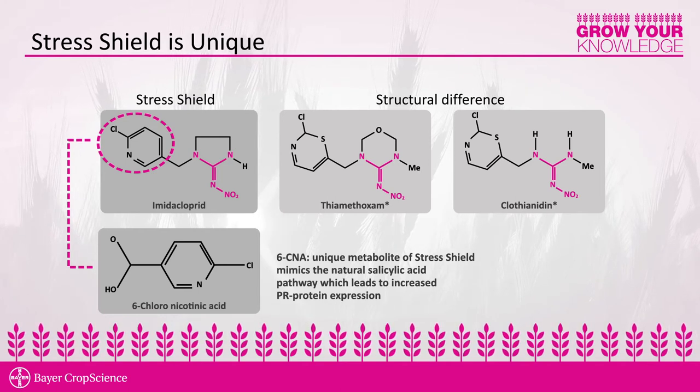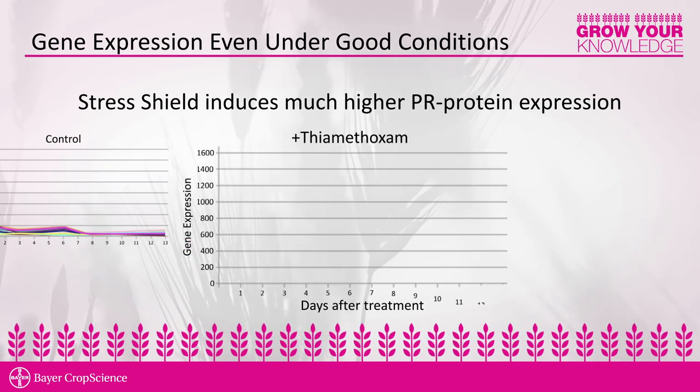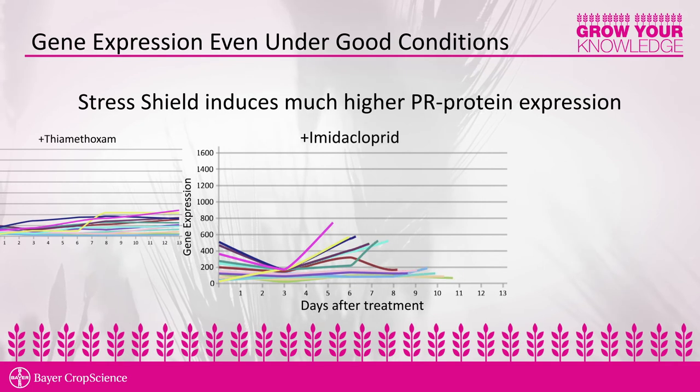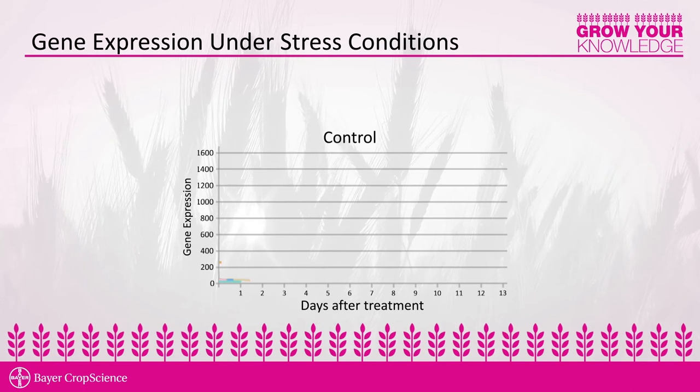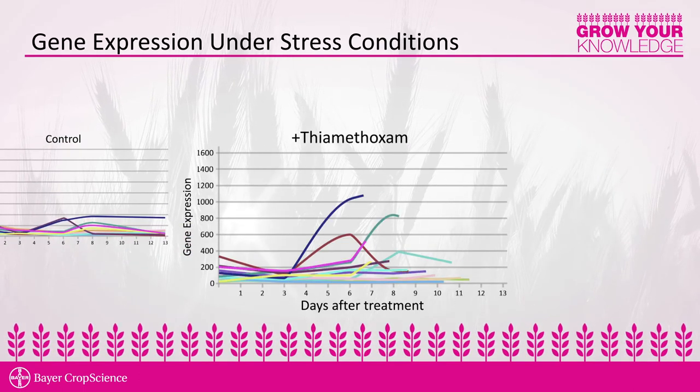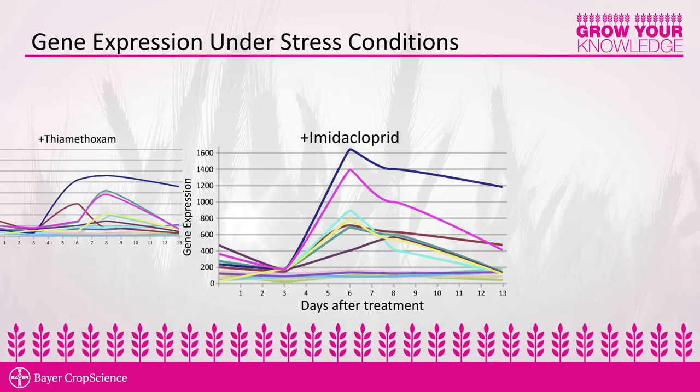When a plant is stressed by disease, it will respond by producing PR proteins to defend against that disease. Non-drought stress plants treated with Stress Shield show an increase in these plant stress protein responses. Other neonic insecticides, because they don't produce 6-CNA, do not result in an increase in these disease stress plant proteins. The reason we get the unique reaction from 6-CNA is that it mirrors the natural salicylic acid pathway in the plant. When we do have plants under stress, we get a greater expression of this PR protein with 6-CNA, and still not to the level observed with other neonic insecticides.